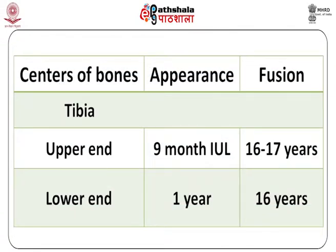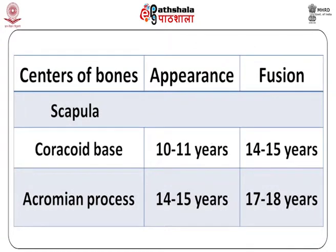For the tibia, the upper end center appears at nine months of intrauterine life and fuses at 16 to 17 years. The lower end appears at one year and fuses at 16 years. For the scapula, the coracoid base center appears at 10 to 11 years and fuses at 14 to 15 years. The acromion process center appears at 14 to 15 years and fuses at 17 to 18 years.